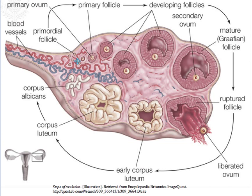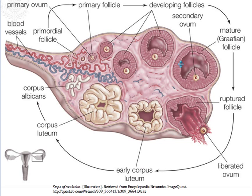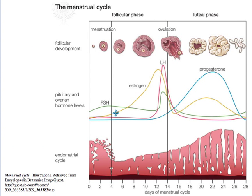That follicle begins to produce the hormone estrogen, which stimulates the proliferation or thickening of the lining of the uterus. As the follicle develops, it is termed a Graafian follicle, and its development brings ever increasing levels of estrogen. As estrogen levels rise, the thickness of the endometrium also increases.